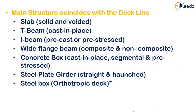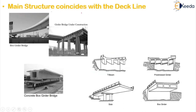Moving on to the next one: main structure coincides with the deck line. All this will come under the category where your main structure and the deck line are one and the same. Examples include solid slab or wide slab bridges, T-beam bridges cast in place, I-beam bridges whether precast or pre-stressed, wide flange bridges composite or non-composite, cast-in-place segmental or pre-stressed concrete bridges, steel plate girder bridges straight or haunched, and steel box also called orthotropic deck bridges. In all these, your deck line and your main structure are one and the same.